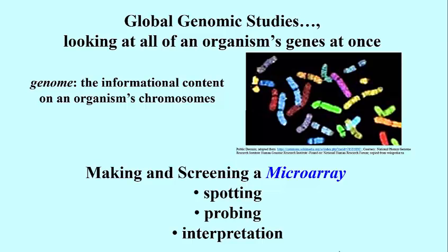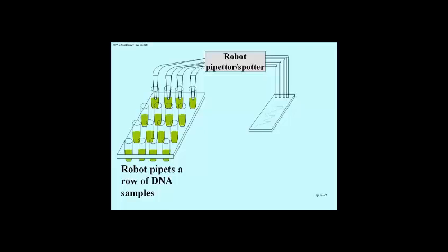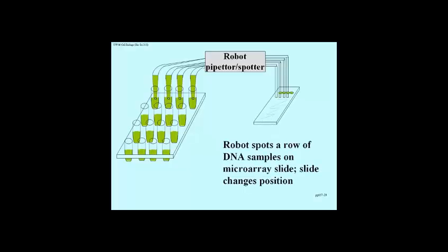Let's take a look at how that works. From the get-go, microarray production has been robotized — it had to be, because we're talking about literally thousands or tens of thousands of little spots of DNA that have to end up on a piece of glass. There's a robot that pipettes DNA from a row of DNA samples and deposits them onto the surface of a slide.